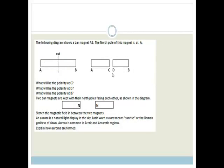Right, now let's look at the next question. It says, the following diagram shows a bar magnet AB. The north pole of this magnet is at A, so that's north, and this is south. Now, it is cut in half, and they say, what is the polarity of C, and at D, and at B? Right, so this is interesting, and in fact, I actually did the experiment many years ago.